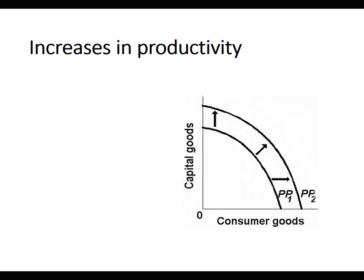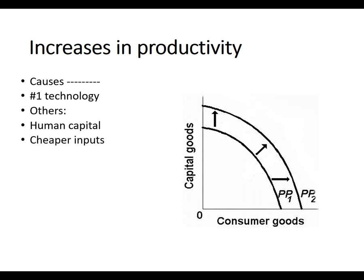Let's go through some key increases in productivity. Number one is the technological level of the economy — the internet made us much more productive, faster computer networks, better methods of doing things. Number two is human capital: as a society gets more educated, you see this in developing countries where the average education level rises from eighth grade to some college, and you see an increase in what they can produce. Number three is cheaper inputs — through globalization, finding cheaper materials to produce guns and butter.